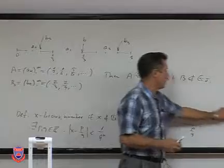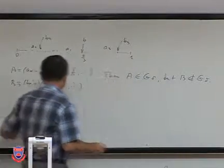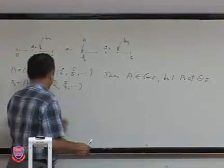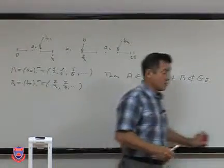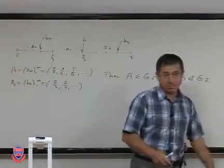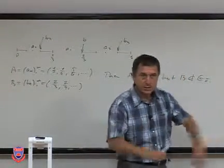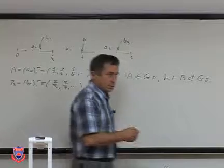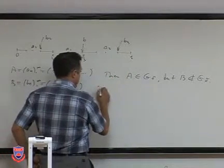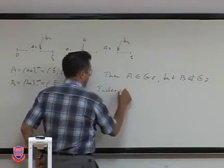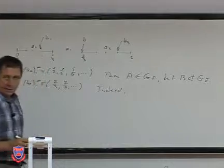I want to repeat what I said at the start of the lecture: if we have a countable set, then of course it is F-sigma, but not always G-delta. Sometimes we can cover it, sometimes not. For example, for sequence A, we can do this rather easily.